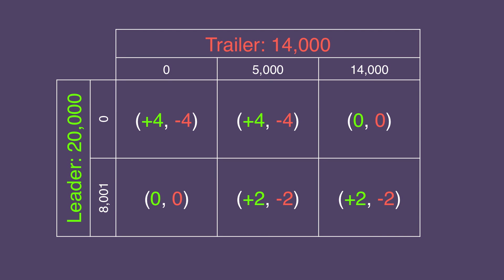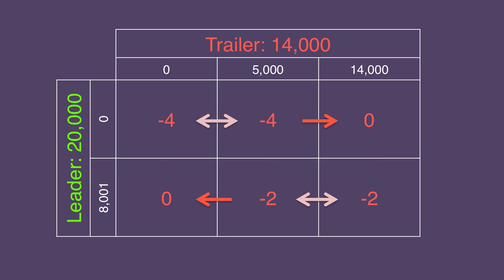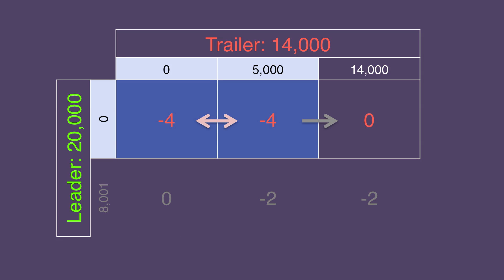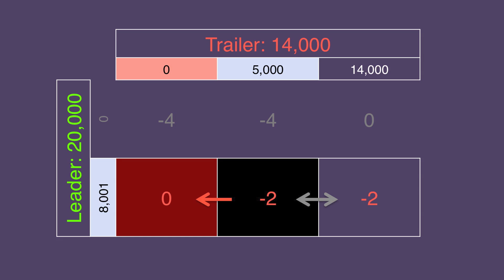Now let's draw arrows, starting in the bottom left. If the trailer wagers 0, the leader can win every time by wagering 0 instead of 8,001. If the leader wagers 0, the trailer gets the same results whether he wagers 0 or 5,000, and in either case would be better off going for everything. Let's forget about the leader for now and look only at the trailer's payoffs. We'll compare the 5,000 wager with the 0 wager for the trailer. He gets the same result if the leader wagers 0, and does better wagering 0 if the leader wagers large. He can never do better by wagering 5,000, only worse. Therefore, we say the 5,000 wager is dominated by the 0 wager.